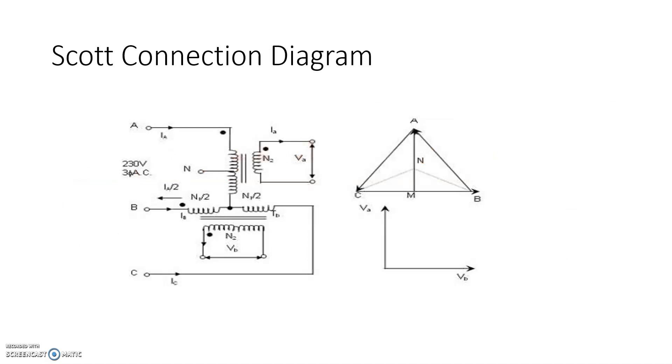The figure shows the diagram for the Scott connection. As you can see, there is one main transformer and another is a teaser transformer. So, the Scott connection is built with the help of two single-phase transformers. The desired voltage is the same on the two-phase and three-phase sides.